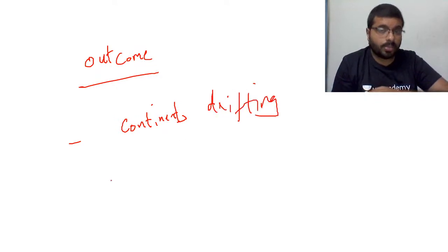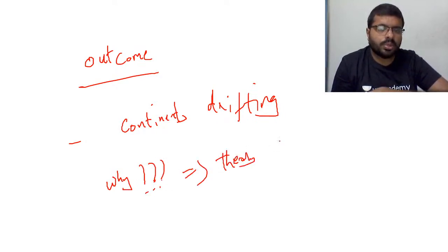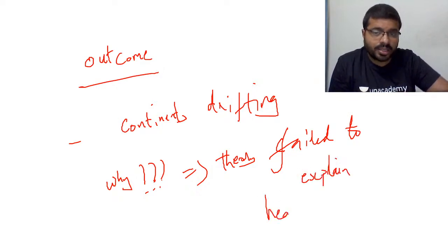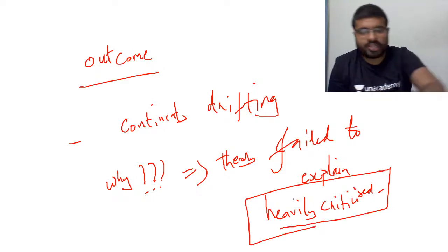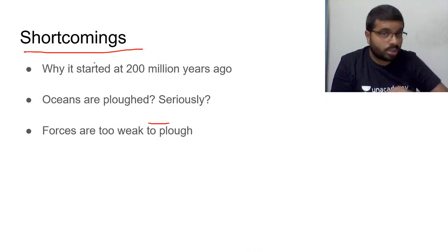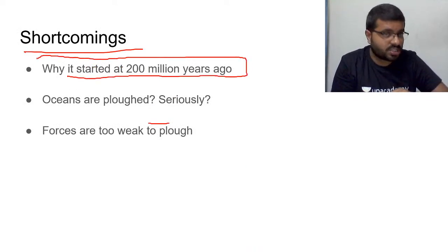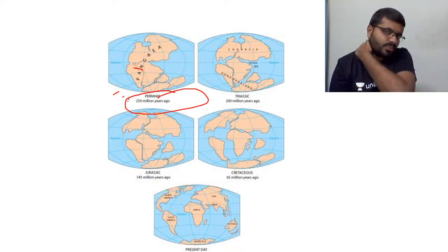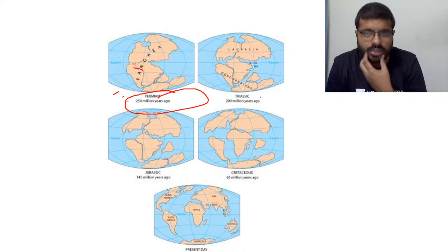The continental drift theory was heavily criticized for its shortcomings. First, it could not explain why the drift started 200 million years ago. Second, the forces proposed — tidal force and polar fleeing force — were far too weak to move entire continents. These two explanations were never proven scientifically, leading to widespread criticism of Wegener's theory.